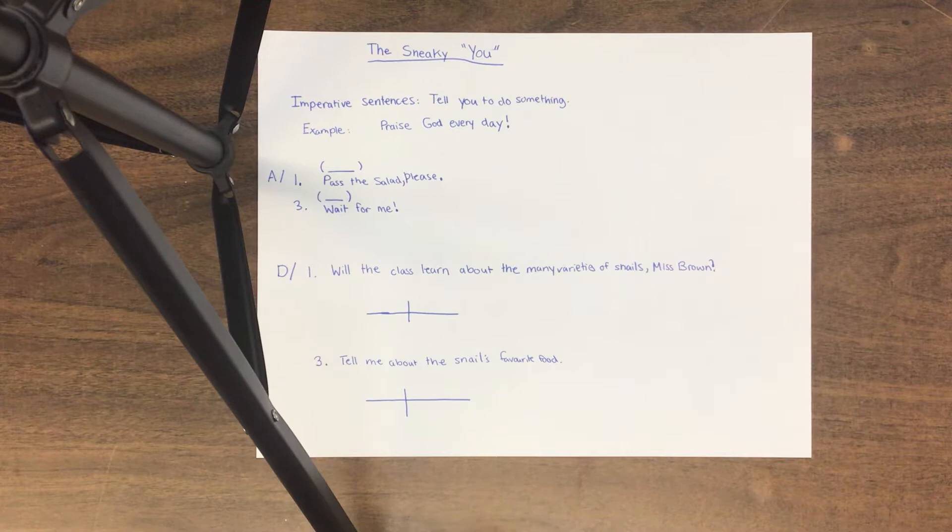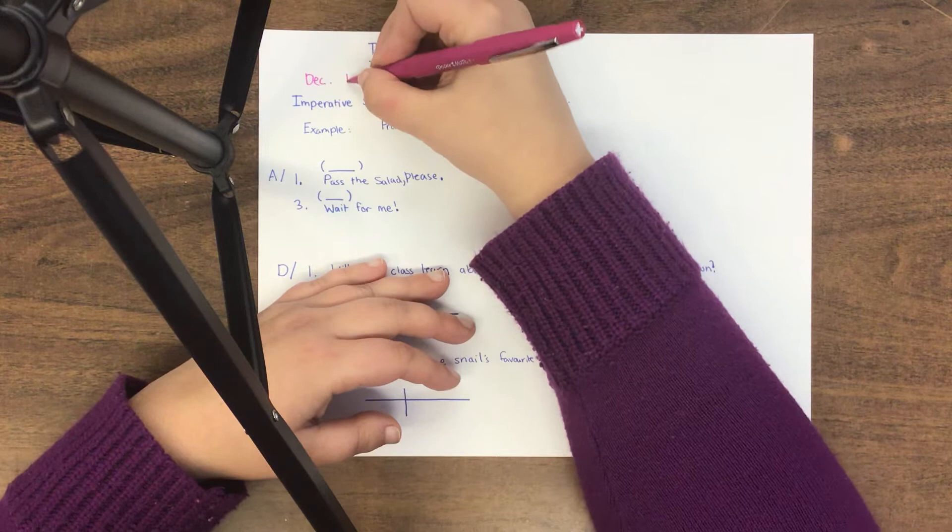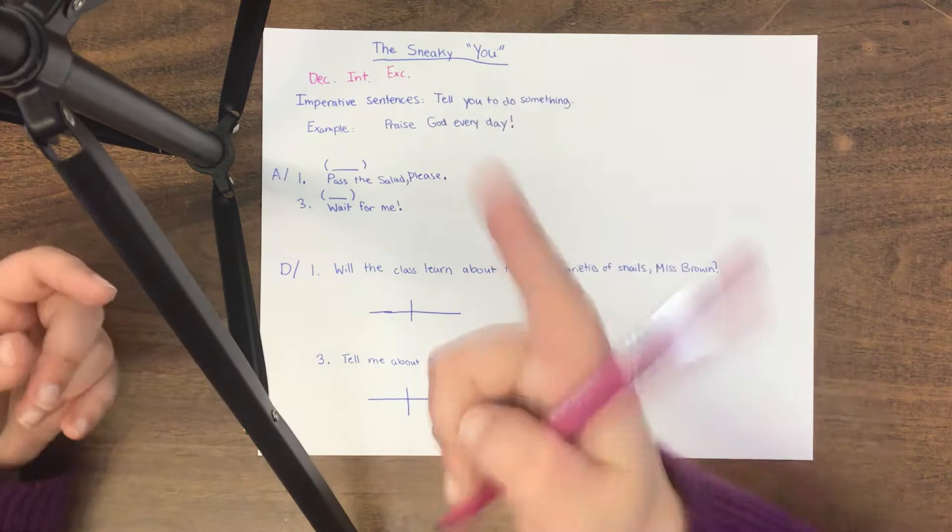So just a little bit of review. There are four different types of sentences we talk about. The declaratives tell us an interesting fact or something about something else. Our interrogatives tell us a question or they ask us a question. Our exclamatories tell us lots of emotion. And finally, our imperative sentences tell us to do something. It's like they're ordering us to do something.